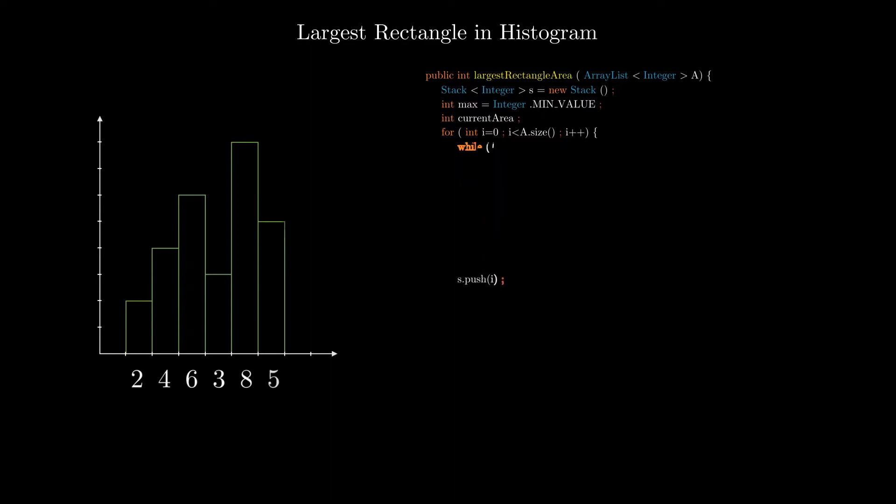But before we do that, till the stack is not empty and the top element is greater than our current array element, we need to first perform some area calculations. We pop the top element and the max area for this element is given by, but this is true only if the stack is not empty. If the stack is empty, then length of rectangle is to be considered from beginning of the array till i-1, which is i units. Once we have the current area, we update the max area found so far.